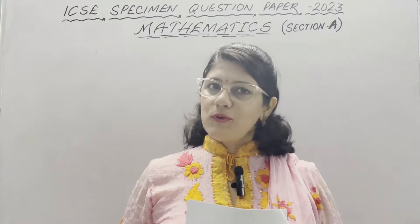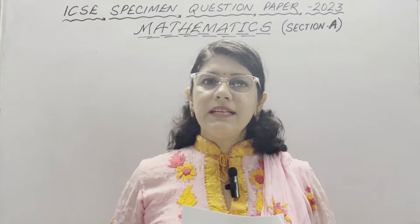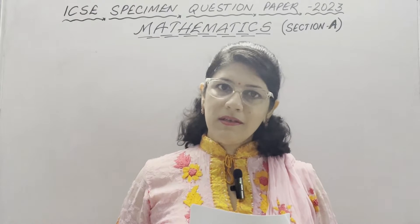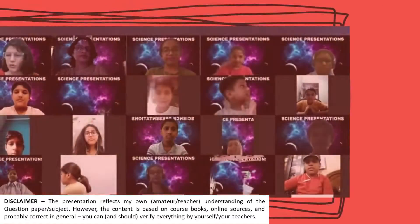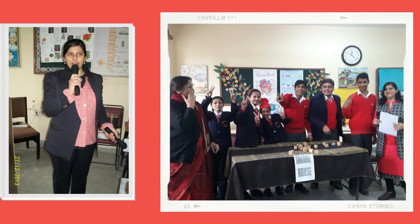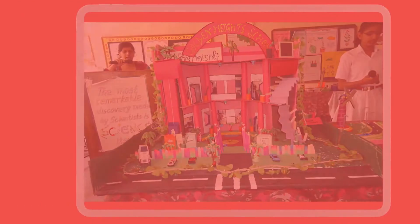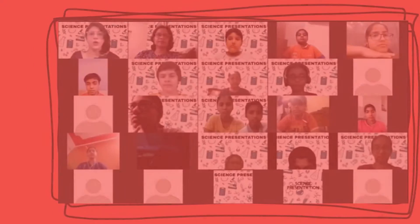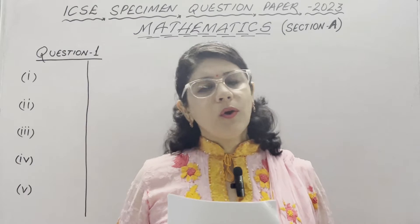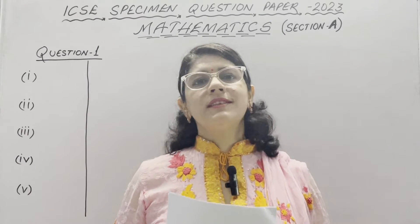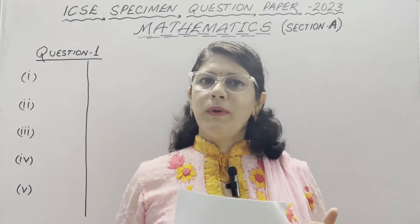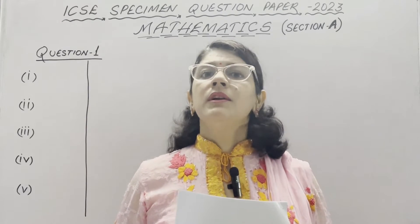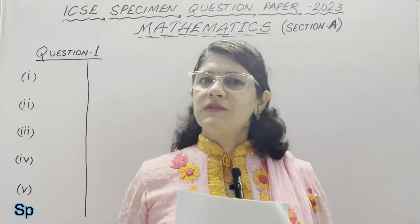Hello viewers, I am Deepti Hans. Today we are here to discuss ICSA specimen question paper mathematics 2023. We are going to start with Section A which consists of only three questions. Question 1 is MCQ of 15 marks, Question 2 is 4 markers each totaling 12 marks, and Question 3 is 13 marks. Total 40 marks for Section A.